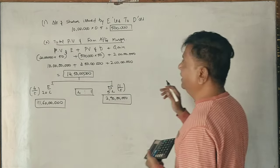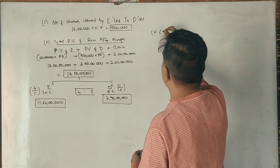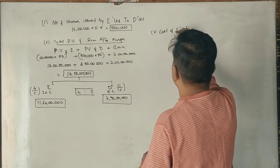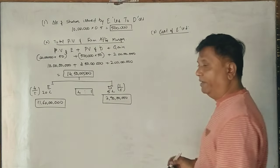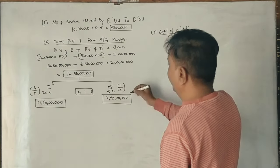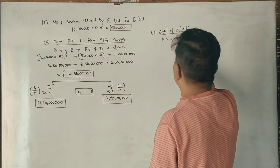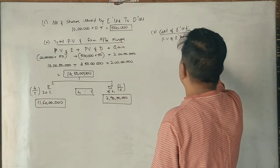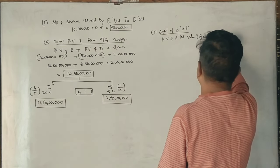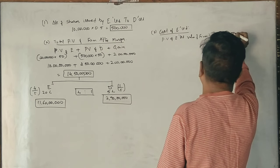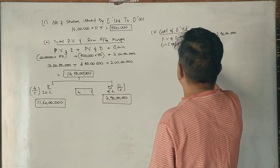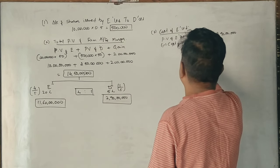So what is the cost for E-Company? This is the last part of the question — the cost of E-Limited. The present value of E-Limited's share of the firm after merger is ₹2 crore 90 lakh, which represents the value attributed to D-Limited's shareholders.